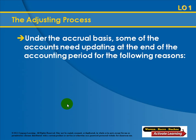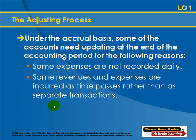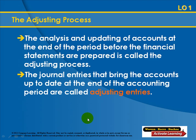Under the accrual basis, some accounts need updating at the end of the accounting period. Some expenses are not recorded daily, like utilities and rent. We may also need to update for accrued wages and other items. Some revenues and expenses are incurred as time passes rather than as separate transactions, and some revenues and expenses may be unrecorded altogether. The analysis and updating of accounts at end of period before financial statements are prepared is called the adjusting process. The journal entries that bring accounts up to date are called adjusting entries.